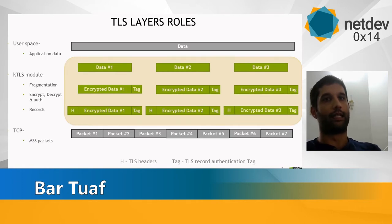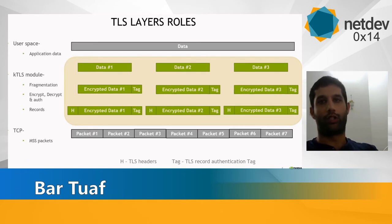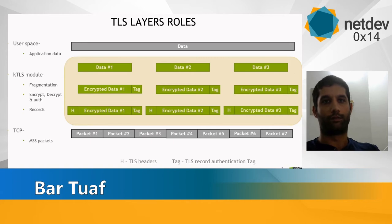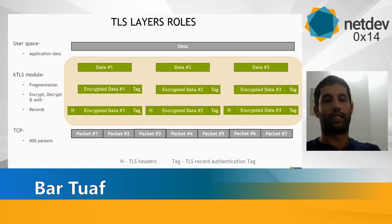This scheme shows the role of each layer. User space data is kept in memory. The TLS protocol is responsible for data presentation, encrypt/decrypt, authentication, adding headers and trailers, and dividing data into records. It then hands off to TCP, which splits the record into max segment size packets.